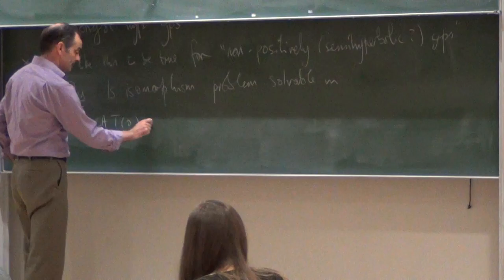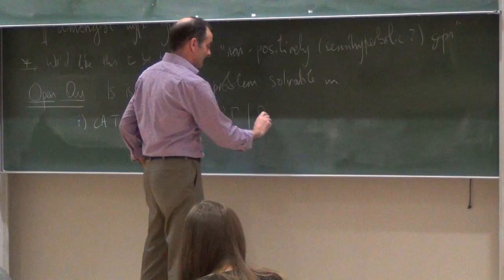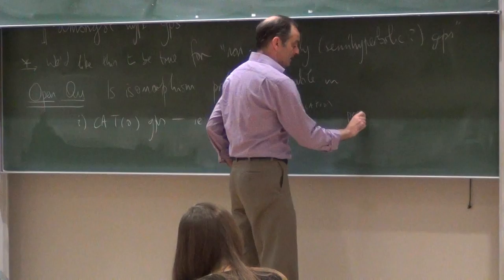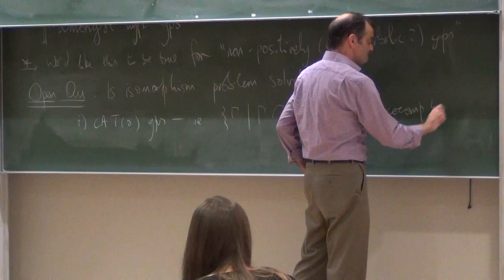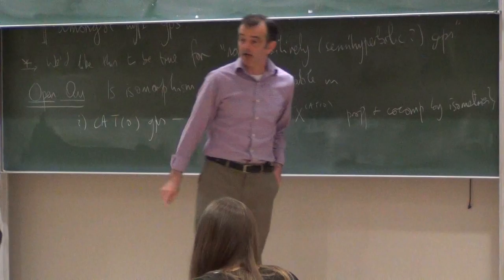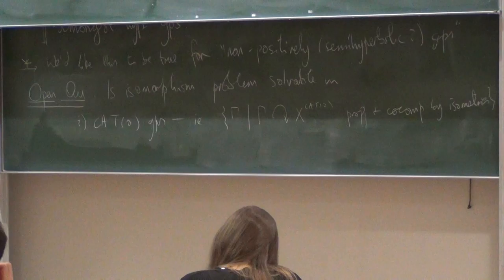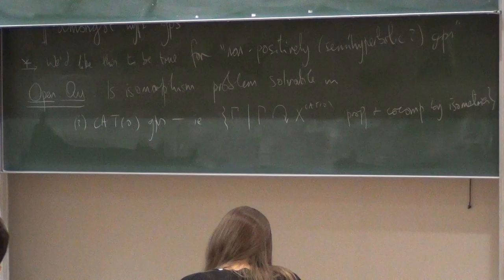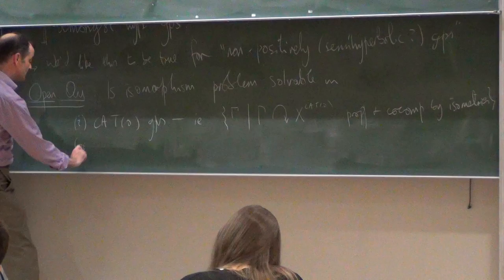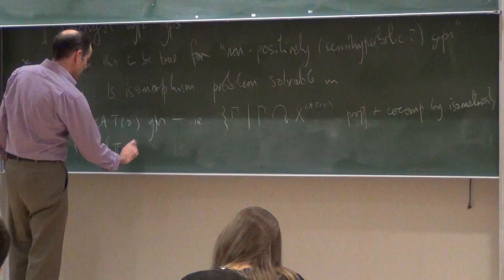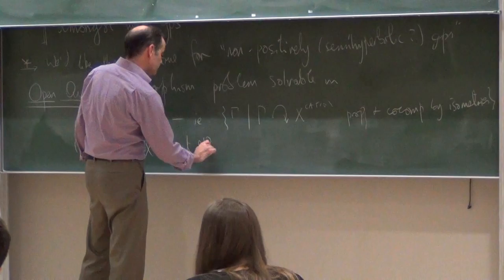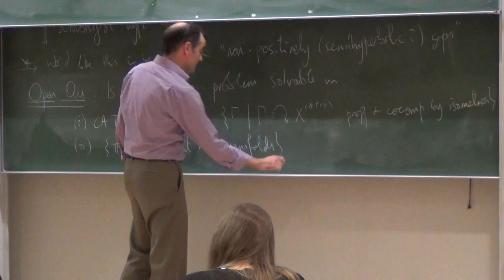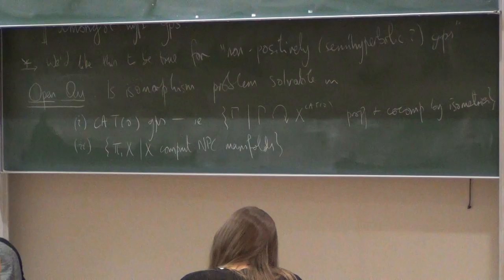The most classic non-positive curvature groups is open. Open question, which I increasingly think the answer is no: is the isomorphism problem solvable for the class of CAT(0) groups? That is, groups that are fundamental groups of properly discontinuously and cocompactly isometric CAT(0) spaces. We don't know that. Just no idea. I think it's a great problem, and to solve it in any significant subclass is a great theorem. There should be positive results.